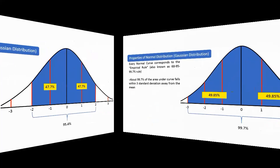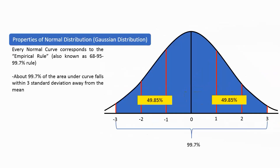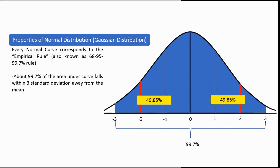The same applies to the 99.7% rule. About 99.7% of the area under the curve falls within three standard deviations away from the mean. With the mean at 0, counting three to the left gives 0 to negative 3, with an area of 49.85%. The same applies to the positive side, from 0 to positive 3, also giving 49.85%. Combining both areas gives us 99.7%.